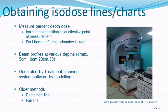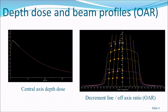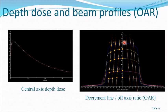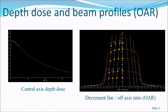Older methods for drawing isodose lines include the decrement line method and the fan line method. Using depth dose curves at the central axis and profiles at various depths such as D-max, 5, 10, 20, and 30 cm, you find where the dose ratio is 0.9 on each profile and join those points to form the 90% decrement line. Similarly, you draw 0.8, 0.7 decrement lines, and then connect points of equal dose to obtain the isodose lines.